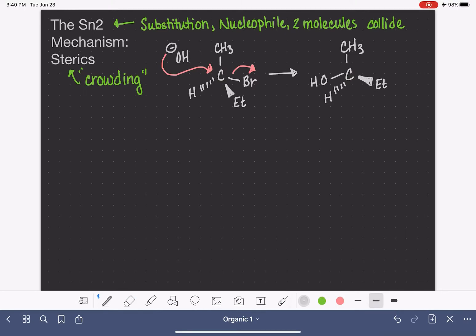Another thing that we take into consideration because of the nature of the mechanism is the sterics or the crowding at the carbon where all the business is taking place. This carbon needs to be accessible to the nucleophile because the nucleophile is attacking the carbon while it still has four bonds in place. It's kind of a tight fit to get that nucleophile to come in.